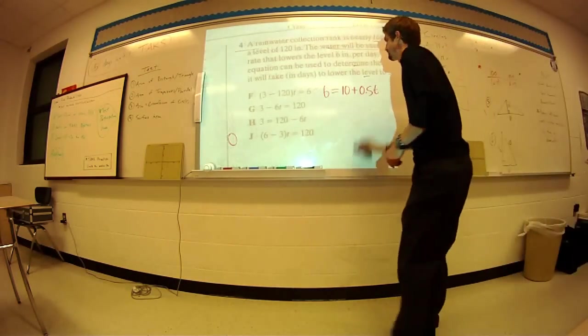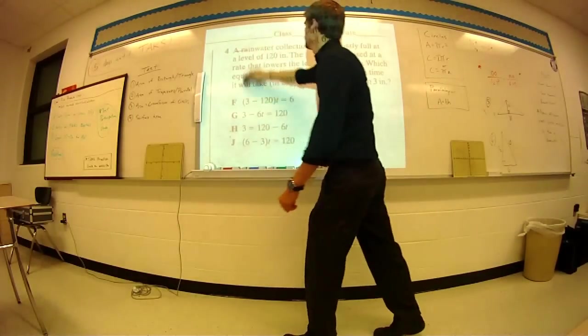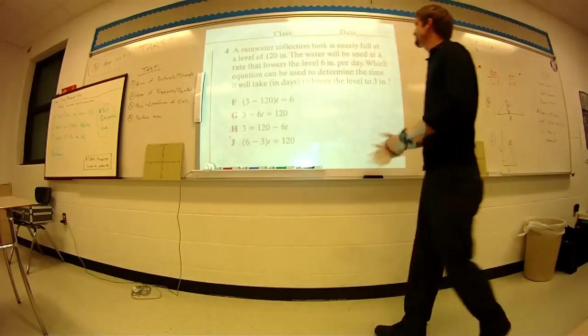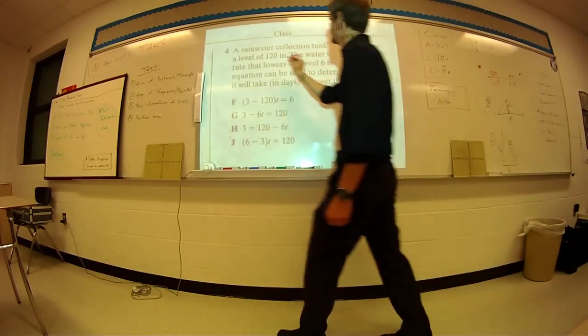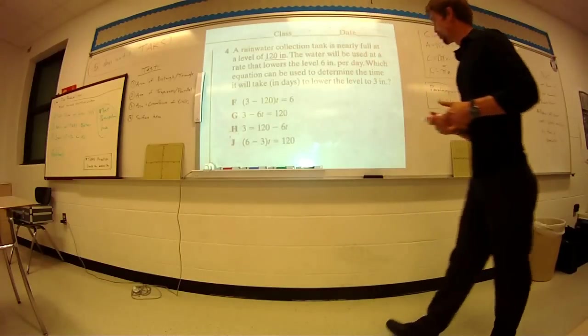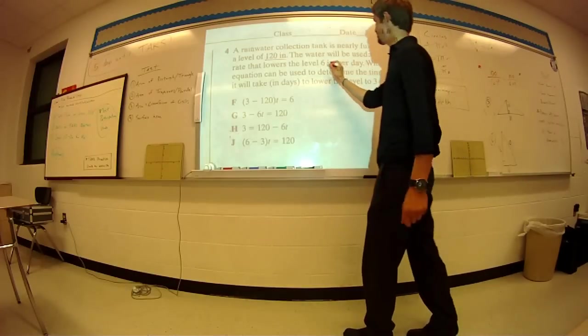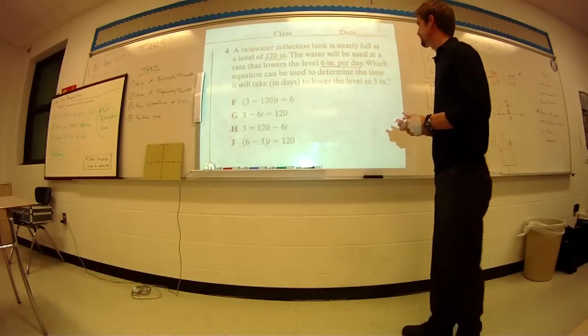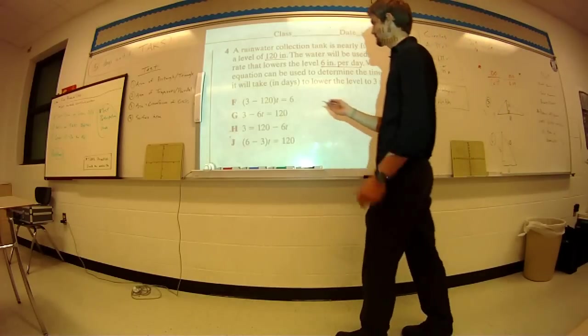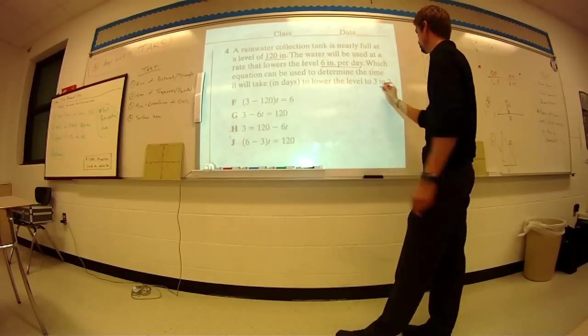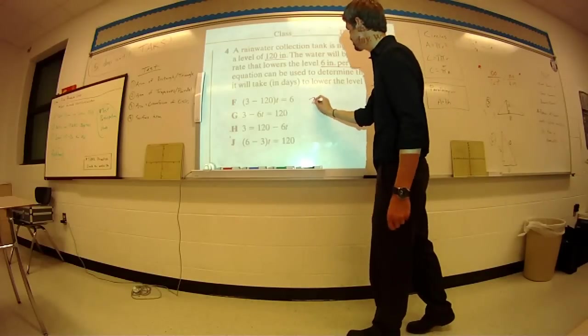We've got three more. Rainwater collection tank nearly full at a level of 120. This is going to be important information. The water will be used at a rate that lowers the level six inches per day. Which equation can be used to determine the time it will take in days to lower the level to three inches?